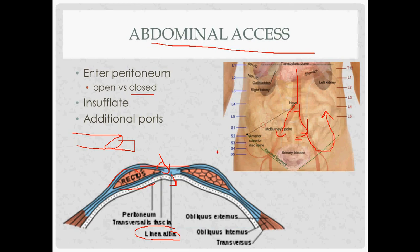After insufflating with CO2, you place additional ports. You can confirm you're in the peritoneum with the water drop test — put a little water in, and if it flows through without resistance, you're inside the peritoneum. If you try to insufflate and get a very large pressure rise right away, you're probably not in yet.